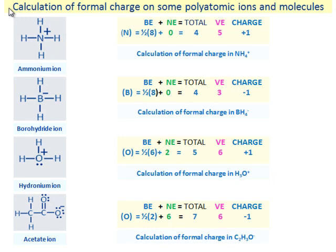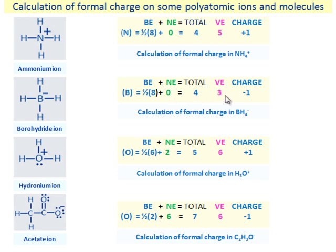We will continue to illustrate how to calculate formal charges on some polyatomic ions and molecules. In the ammonium ion, the nitrogen atom has half of 8 bonded electrons plus 0 non-bonded electrons, a total of 4 electrons. Since it has 5 valence electrons, it carries a positive charge. In the borohydride ion, boron has half of 8 bonded electrons plus 0 non-bonded electrons, a total of 4 electrons. Since it has 3 valence electrons, it carries a negative charge.